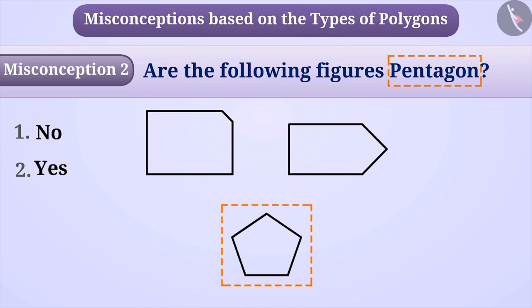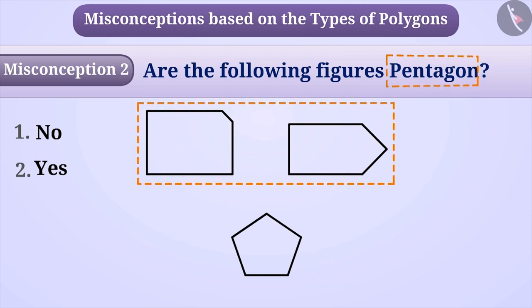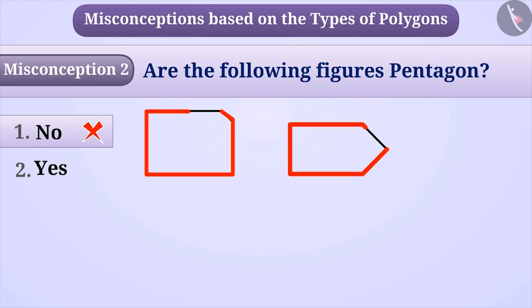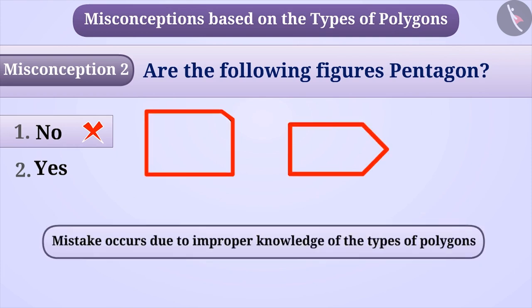With this understanding, they think that the given figures are not a pentagon. So, they give the answer as option 1, which is an incorrect answer. Such a mistake occurs due to improper knowledge of the type of polygons on the basis of sides.